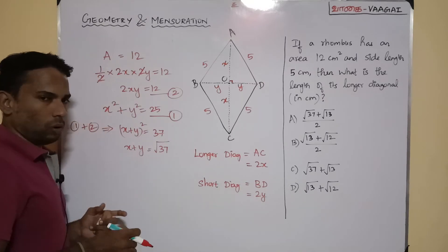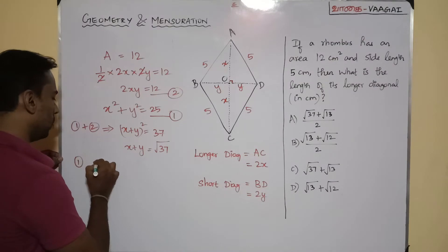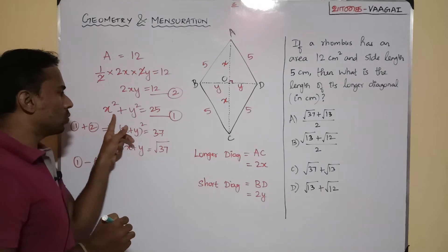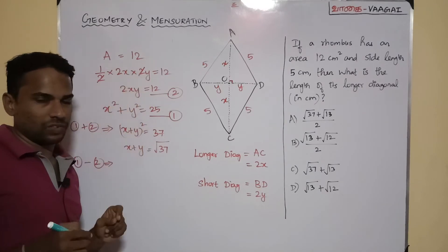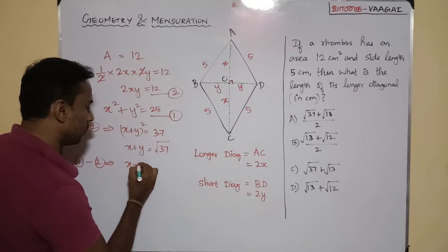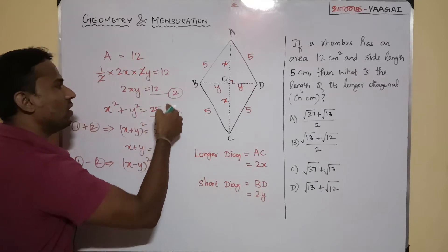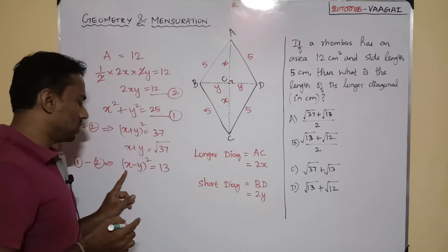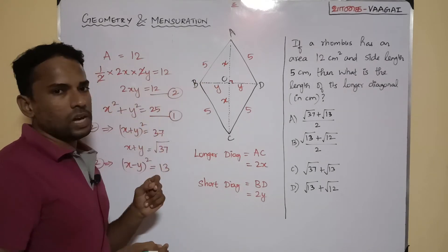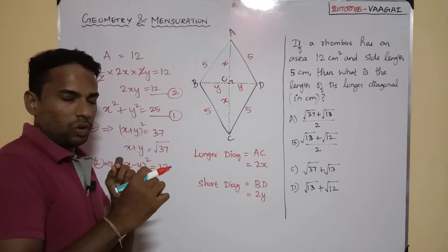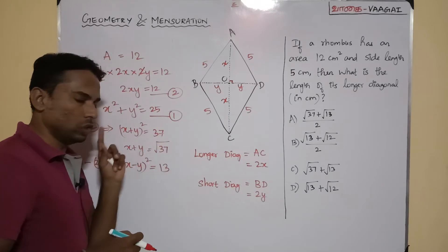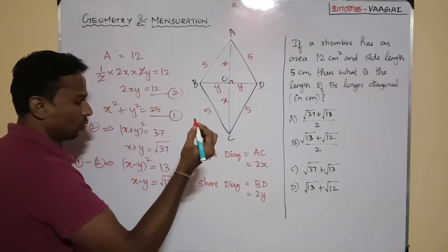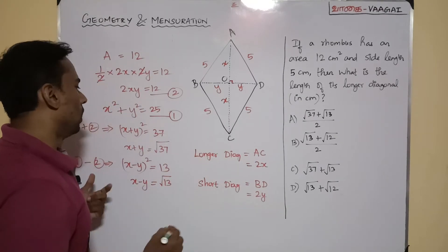Next, I subtract equation 2 from equation 1: x² + y² − 2xy = 25 − 12, which gives (x − y)² = 13. Since x is greater than y, x − y = √13. Let this be equation 4.